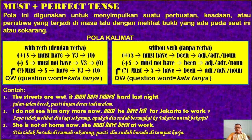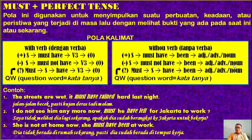Bagaimana apabila kalimat tidak ada kata kerja? Maka pola kalimatnya sebagai berikut. Positif: subjek diikuti dengan 'must have', diikuti dengan 'been', diikuti dengan adjective, adverb, atau noun. Negatif: subjek diikuti dengan 'must not have', diikuti dengan 'been', diikuti dengan adjective, adverb, atau noun.